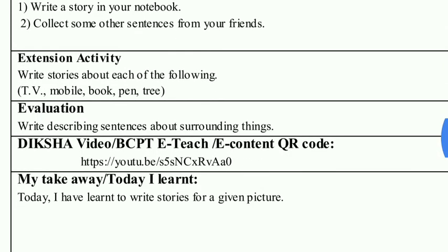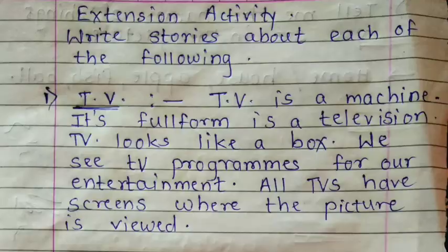In the extension activity: write stories about each of the following. Various things are given in brackets — write a few sentences about each of them. The things given are: mobile, book, paint, tree. Let us see the answers. For TV, the answer written earlier was: 'TV is a machine. Its full form is Television.'